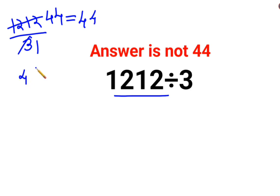Now let's just cross verify. 44 when multiplied by 3, the answer comes out to be 132. So that is not even close to 1212.